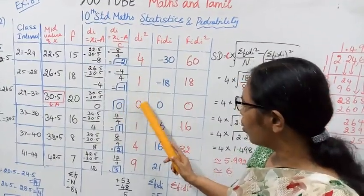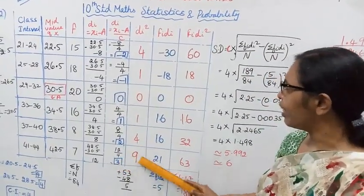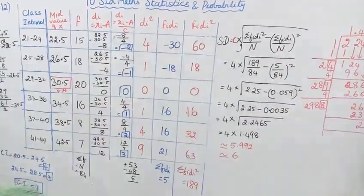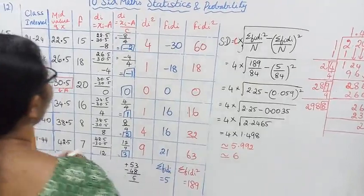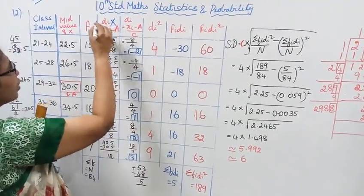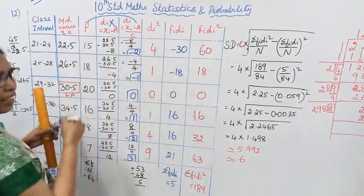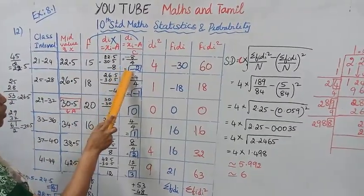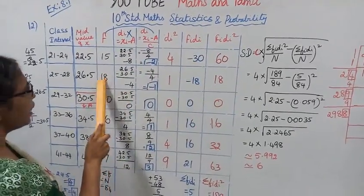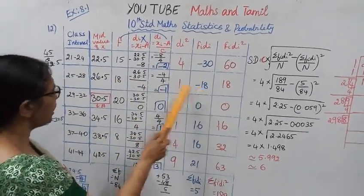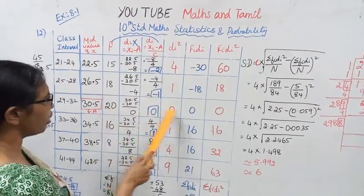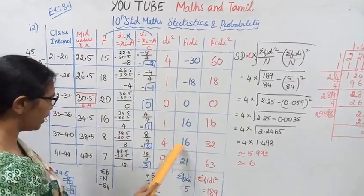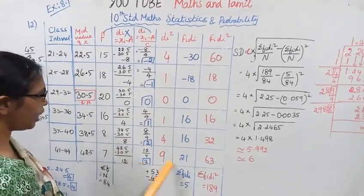The da squared values are: (-2)² = 4, (-1)² = 1, 0² = 0, 1² = 1, 2² = 4, 3² = 9. Now for fi times da: 15 × (-2) = -30, 18 × (-1) = -18, 20 × 0 = 0, 16 × 1 = 16, 18 × 2 = 36, 7 × 3 = 21. We now compute the sum of fi·da.